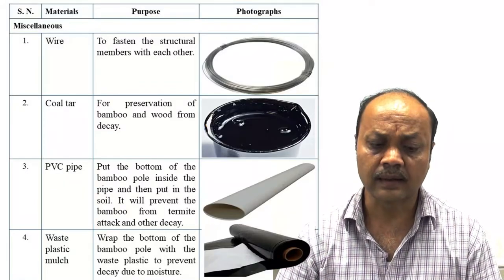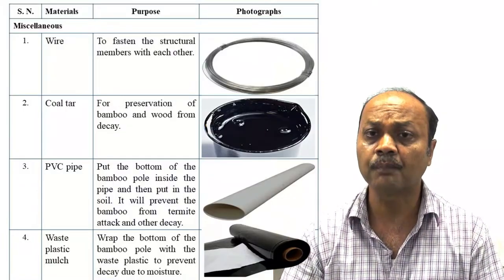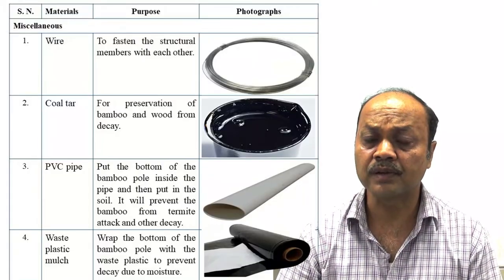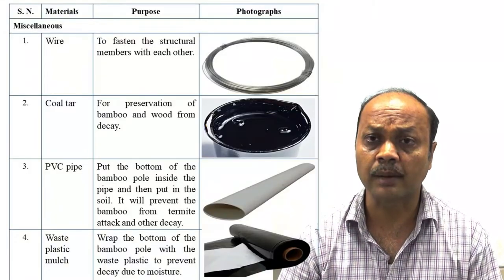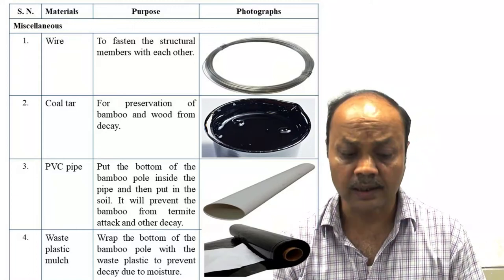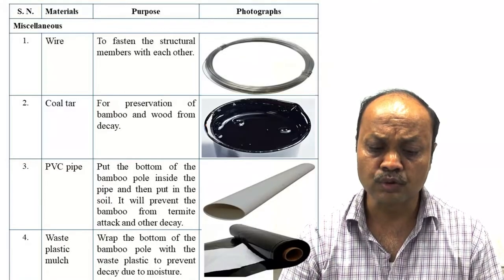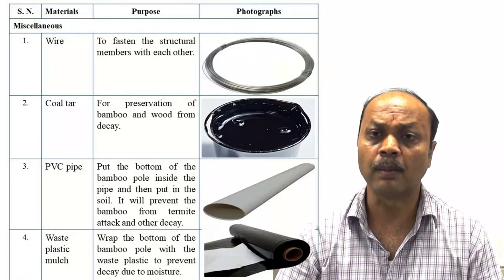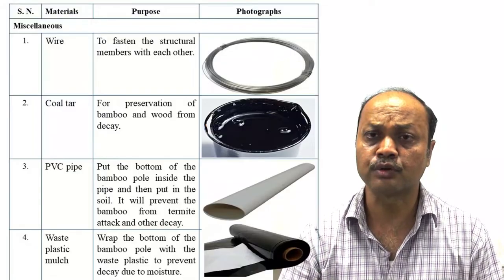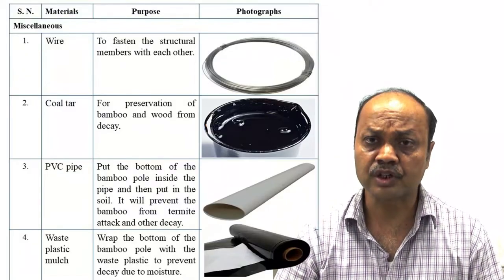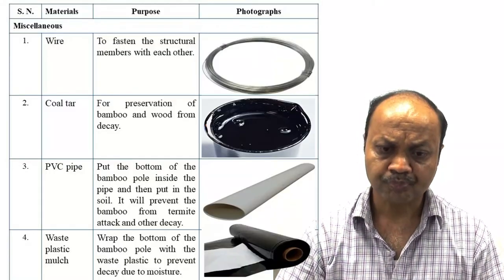PVC pipe is sometimes used by inserting bamboo inside it so that decay and damage from termite — which is very common in Jharkhand — will not happen. Waste plastic material or plastic mulch is used to wrap the bottom of the bamboo pole that goes inside the soil, to protect it from decay.